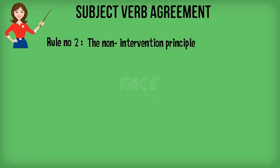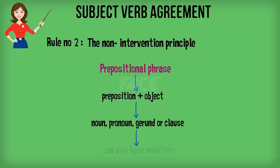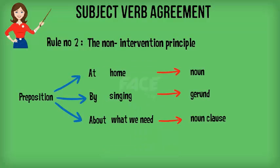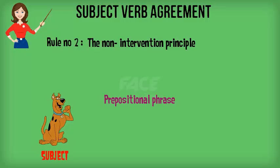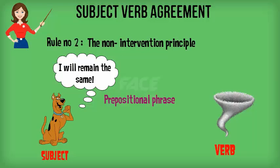Rule number two: the non-intervention principle. In a few sentences, we might come across prepositional phrases which might confuse us. A prepositional phrase is a preposition plus an object. This object can be a noun, a pronoun, a gerund, or a clause, and these objects can also have modifiers attached to them. In some sentences, a prepositional phrase might come in between the subject and the verb. Note that this prepositional phrase will not affect the number of the subject.